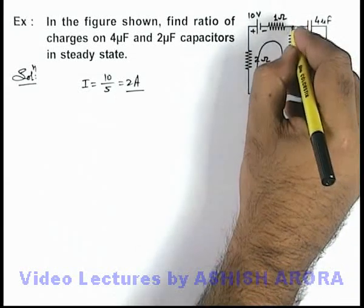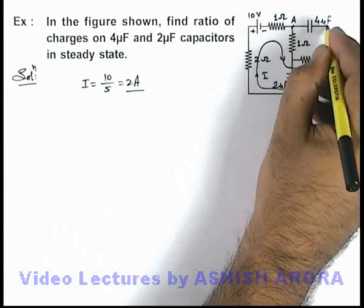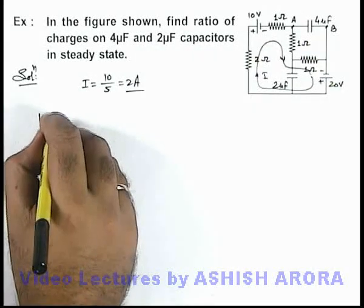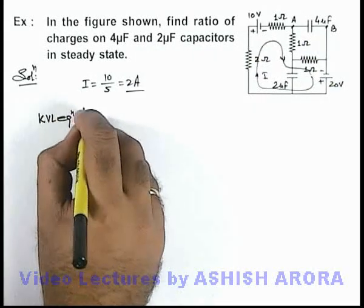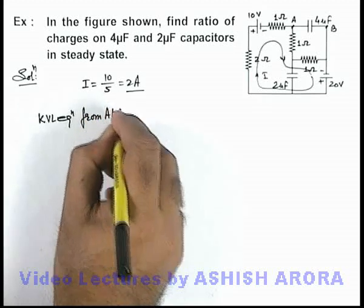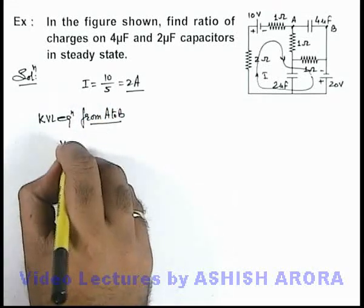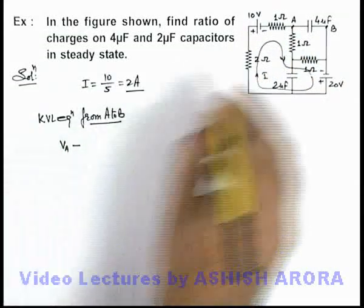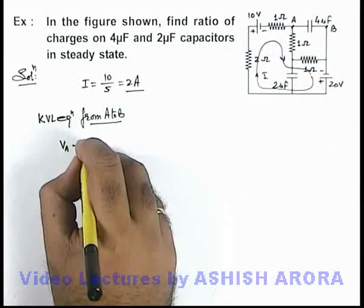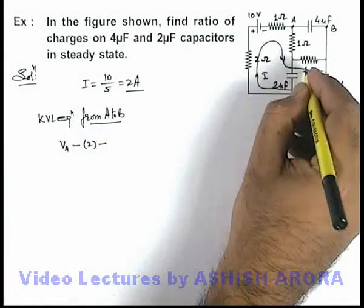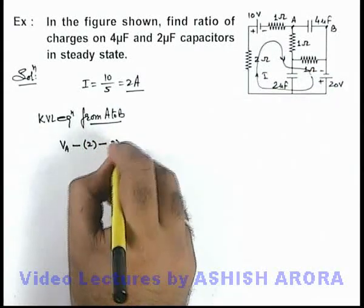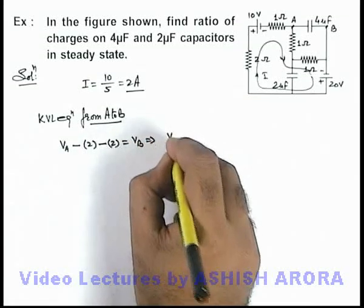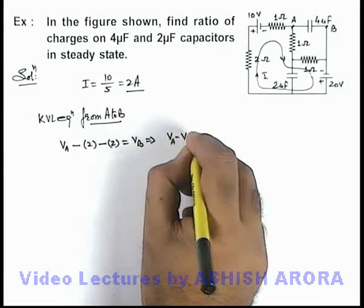Say across 4 micro farad capacitor terminals are ay and b. So here we can write k v l equation from ay to b. In this situation we'll use potential at point ay is v ay, and here we can write it minus 1 into i, that is 2, again minus 1 into i, that will be 2, is equal to v b. This implies we are getting the value of v ay minus v b is equal to 4 volt.